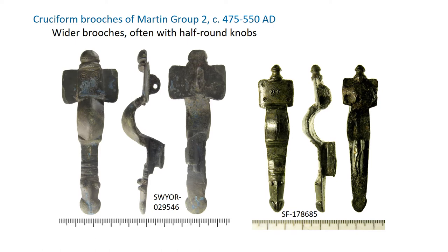Group two are clearly a development from group ones and shade into group threes at the other end. They are broader and generally larger but still simple brooches without lappets; when there are wings they tend to be wider. The knobs are usually half round but can either be separately made or cast in one with the head plate — it's quite possible for the top knob to be cast in one while the side knobs are made separately. These date from about 475 to 550 AD.